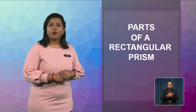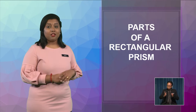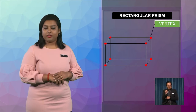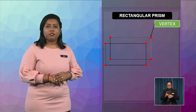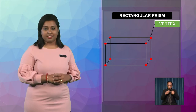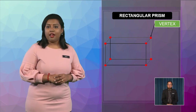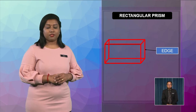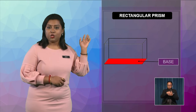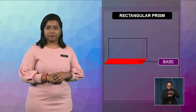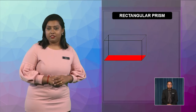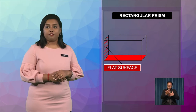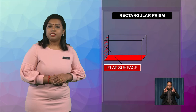Next, let's look at the parts of a rectangular prism. Just as in the previous pictures of the square prism, the red dot seen here is the vertex, and a rectangular prism has 6 vertices. The line on the side as shown on the screen is called an edge. The part shaded in red as shown on the screen is called the base of this prism. Besides the base, the other parts are called flat surfaces, and a rectangular prism has 6 flat surfaces.